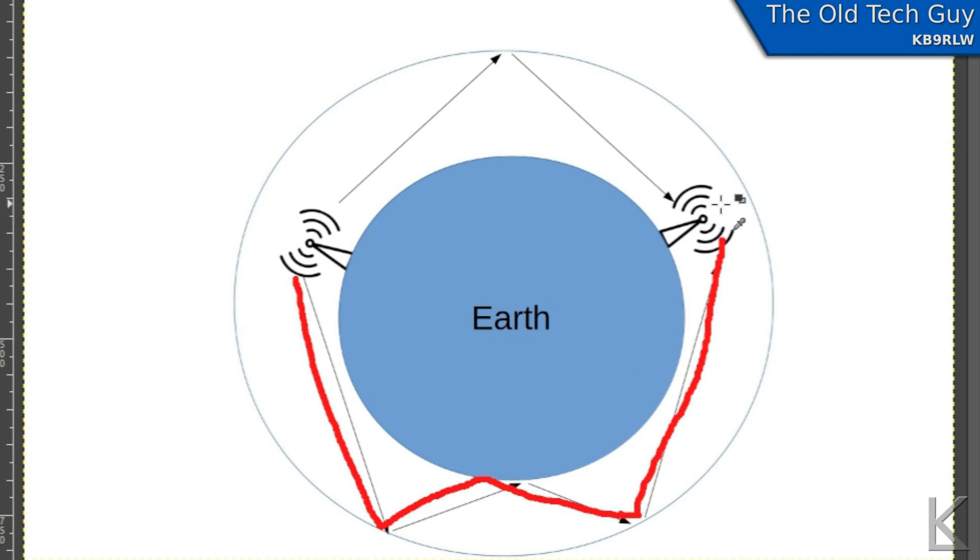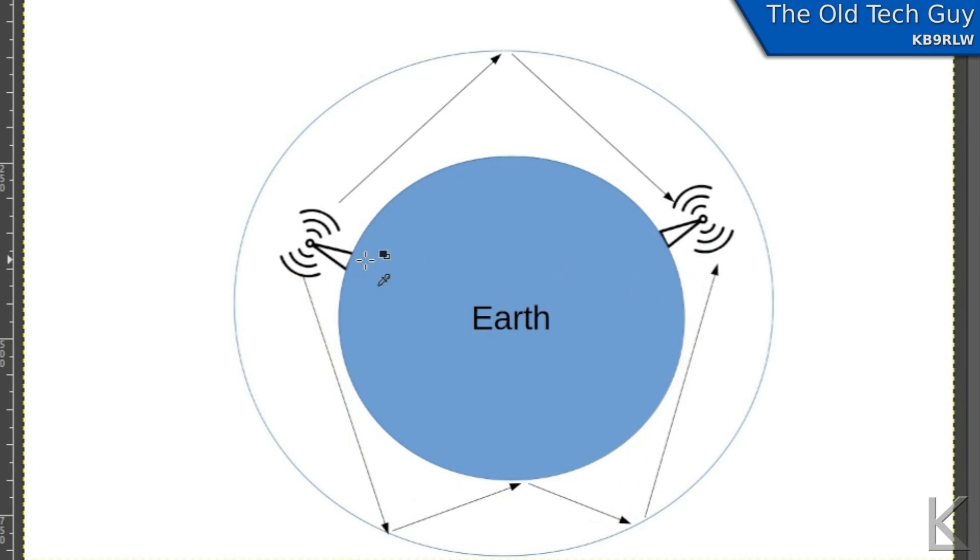So this station over here is receiving signals from two different directions. And now here's the interesting part. Since this distance is further, it takes a little bit longer for that signal to complete its path here.